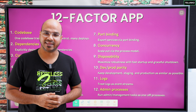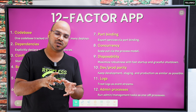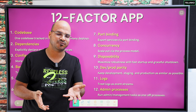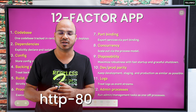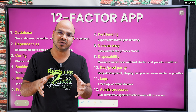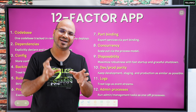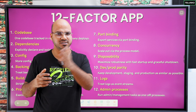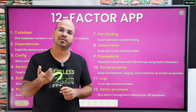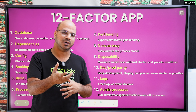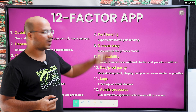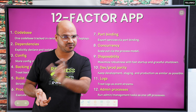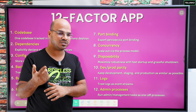The seventh factor is port binding. Every service should have a unique port number. For example HTTP uses port 80; different protocols use different ports. Whatever service you're building, attach a port number to it — we may not know which physical server it's on, but we know what service it provides via the port. Export services via port binding. In microservices, every service will have a different port number.